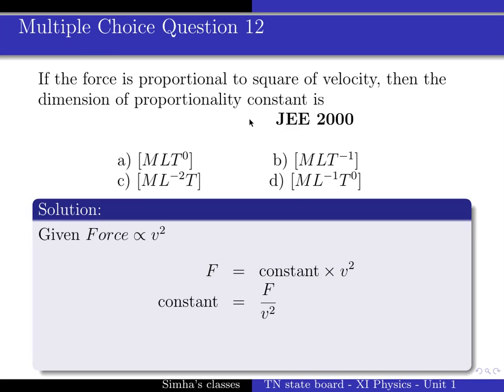What do we do? Dimension of the proportionality constant. So dimension of the proportionality constant should be equal to dimension of force divided by dimension of v square. We will get the answer.